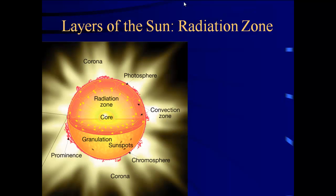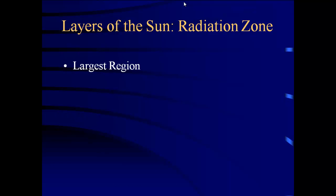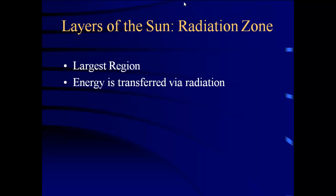The next layer out from the core is the radiative zone, which is the largest region. All the energy from the sun comes from the nuclear fusion in the core, and that energy has to get out. In this region, energy is transferred through radiation — the transfer of light, one photon to the next. Like when sunlight hits a black t-shirt, it absorbs and you get hotter. We'll do some activities so you can visualize what's happening here.